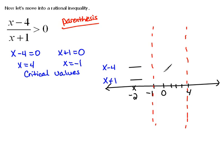Now I'm going to look to see what's happening between negative one and four. So let me choose maybe zero. That's an easy one. If I plug a zero into this factor, zero plus one, that's a positive number. If I plug zero into this factor, zero minus four would be a negative number.